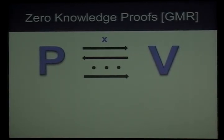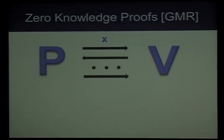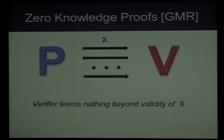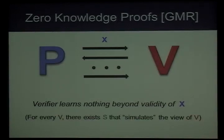Let me give a brief overview of the setting. In a zero-knowledge proof system, we have a prover and a verifier, and the prover is trying to convince the verifier about the validity of statement x. You can think of x as a graph, and the prover is trying to convince the verifier that this graph is Hamiltonian. We require security against the cheating verifier, shown in red. We require that this cheating verifier should not learn anything beyond the validity of x — it should not learn anything more than the fact that the graph x is Hamiltonian. This is formalized by saying that for every cheating verifier, there exists a simulator S that simulates the view of this cheating verifier.